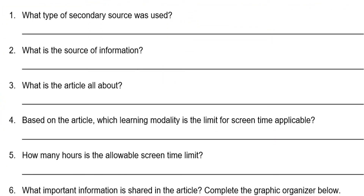Let's answer the questions after reading the article. You may pause the video for enough time to answer. Now let's check your answers. Number one: what type of secondary source was used? It's an online article. Number two: what is the source of information? This is from a website. Number three: what is the article about? This is about the limit on screen time for online classes, according to DepEd.